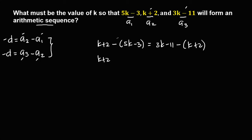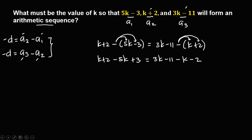Then simplify. We have k plus 2 — distribute this negative, so positive 5k becomes negative 5k, and negative 3 becomes positive 3. On the right side, 3k minus 11 — distribute the negative, so positive k becomes negative k. Since 5 is greater than 1, k minus 5k is negative, and 5 minus 1 is 4, so we have negative 4k.